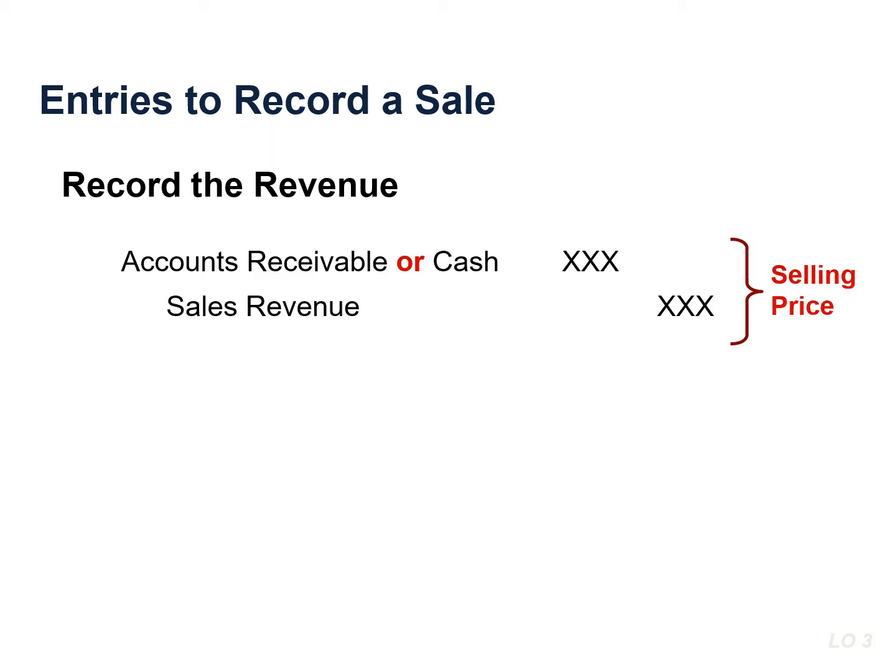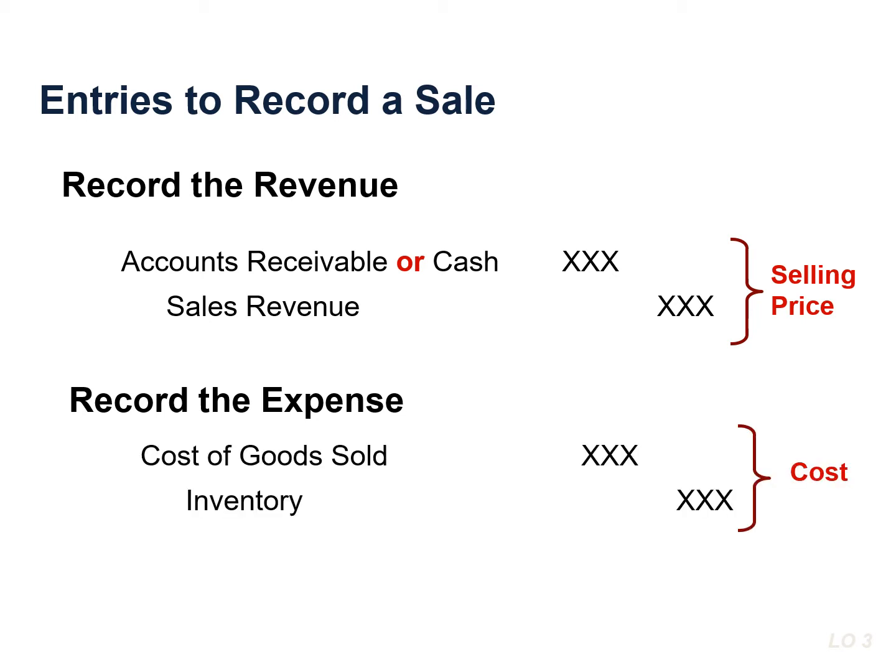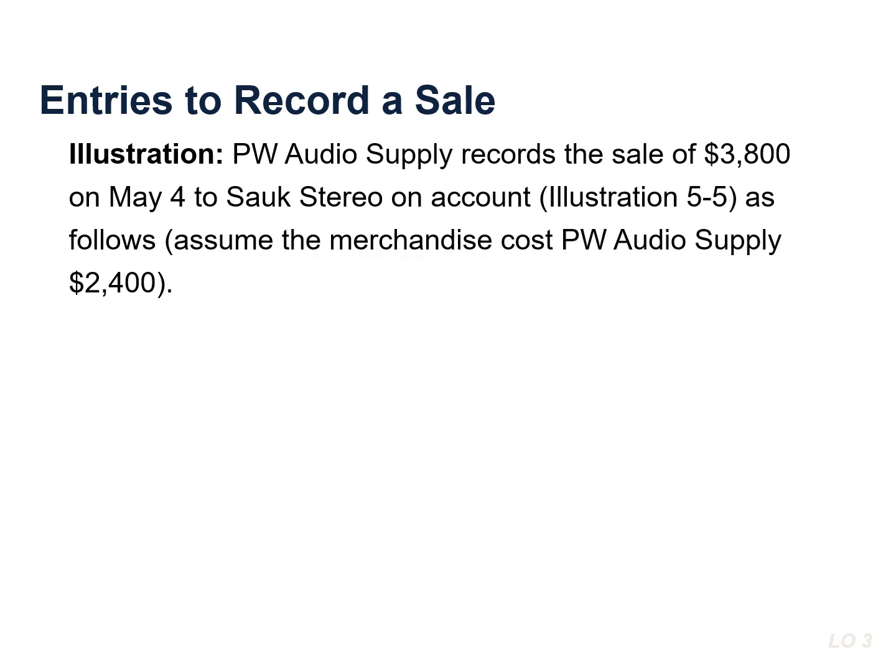The seller makes two entries for each sale. The first entry records the sale — the seller increases or debits cash or accounts receivable if a credit sale, and also increases or credits sales revenue. The second entry records the cost of the merchandise sold — the seller increases or debits cost of goods sold, and also decreases or credits inventory for the cost of those goods.